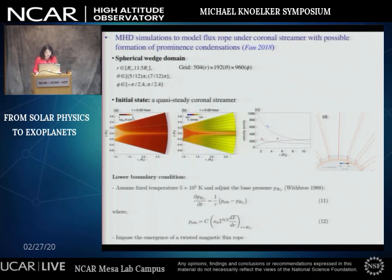These simulations are carried out in a spherical wedge domain extending from about 1 to 11 solar radii, with a latitude width of about 30 degrees and a very large longitudinal extent of about 150 degrees to accommodate a very long flux rope. We first initialize a quasi-steady coronal streamer solution with an ambient solar wind, which is accelerated and heated by simple empirical coronal heating to obtain a helmet dome configuration. The low boundary thermodynamic conditions are fixed at transition region height with a fixed temperature of 500,000 K but with adjustable base pressure, to crudely mimic the effect of atmospheric evaporation. We also impose at the low boundary the emergence of a longitudinally extended magnetic flux rope.